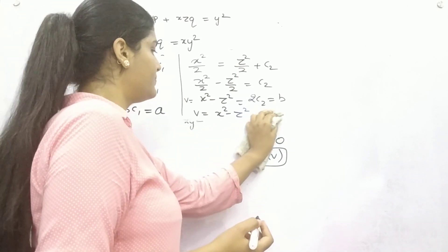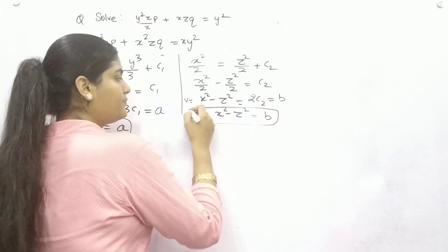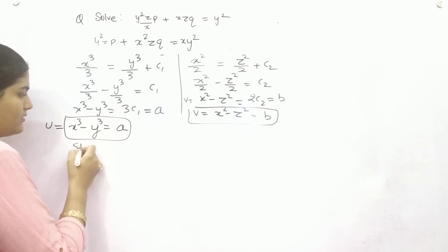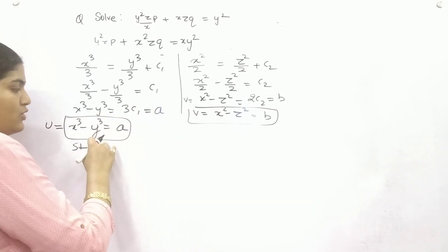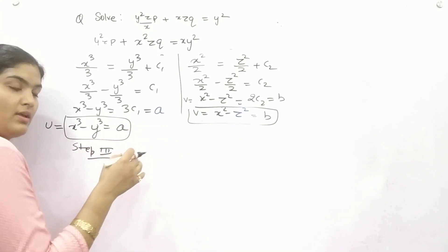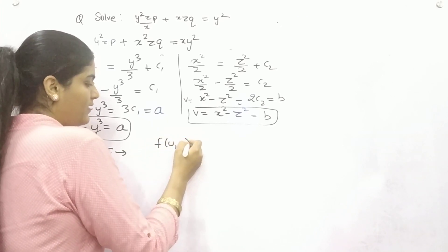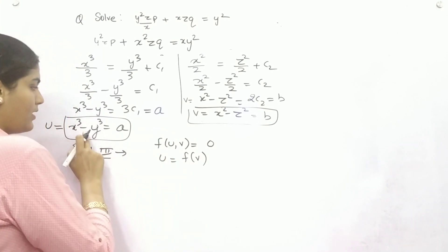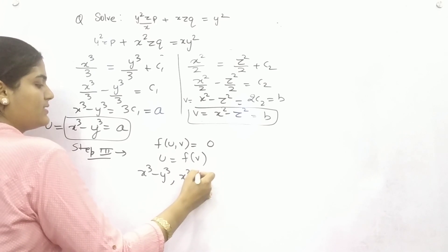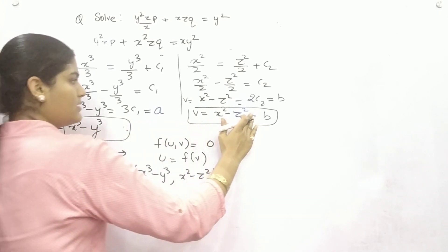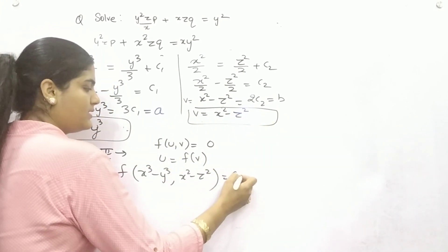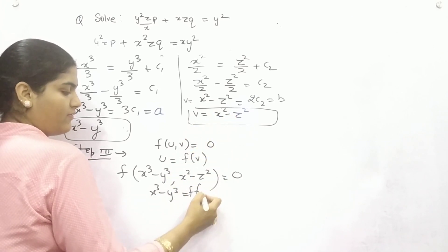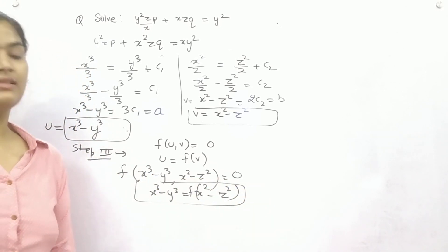Now that you have u and v, move to Step 3. Put the functions into the general solution form: φ(u, v) = 0, or equivalently u = f(v). Your u is x³ − y³ and your v is x² − z². Do not include constants — only the functions. So the complete solution is: x³ − y³ = f(x² − z²).